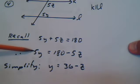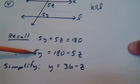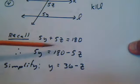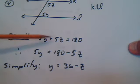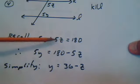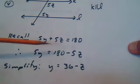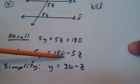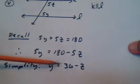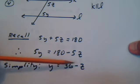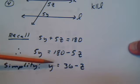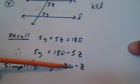Since we have two variables, we want to reduce the number of variables by substituting. We know that 5y + 5z = 180, because same-sided interior angles when the lines are parallel always add up to 180. We'll solve for y: move 5z to the other side by subtracting, then divide both sides by 5. So now we know that y = 36 minus z.